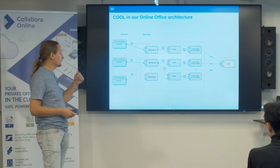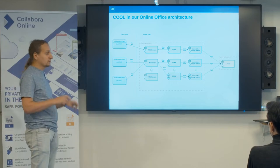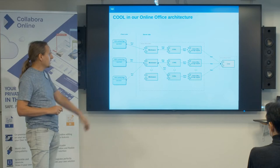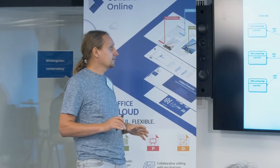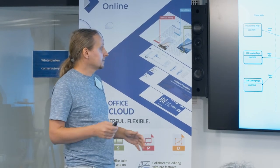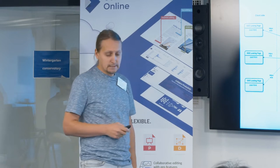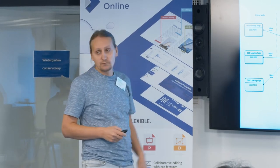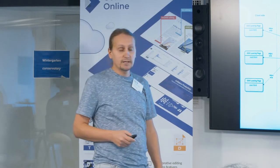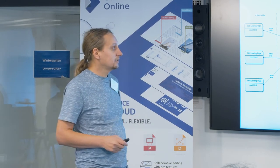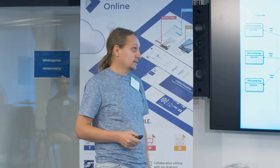Let's discuss the place of Collabora Online in our online office architecture. On the client side we have a landing page which loads cool.html into an iframe. On the server side we have multiple components — one is middleware, which acts as a kind of proxy. Besides forwarding messages from one side to another, it also does load balancing: any new connection that arrives, the middleware decides which instance of COOL to redirect to. There are multiple instances of COOL, and we also have a component called storage adapter, which was needed because our cloud does not understand the WOPI protocol, so we adapt from WOPI to our internal protocol understood by the cloud.